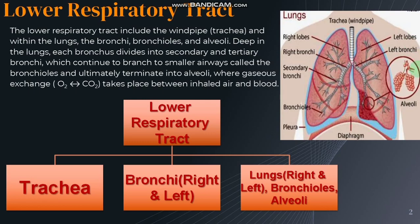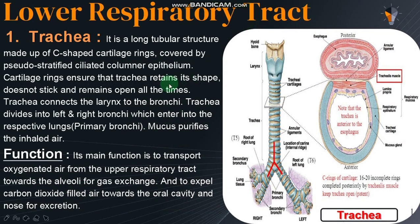The trachea is a long tubular structure made up of C-shaped cartilage rings, 16 to 20 in number. These are incomplete rings, and their function is to maintain the shape of the trachea. The internal lining is of pseudo-stratified ciliated columnar epithelium. The C-shaped cartilage rings ensure that the trachea retains its shape, does not stick, and remains open at all times.